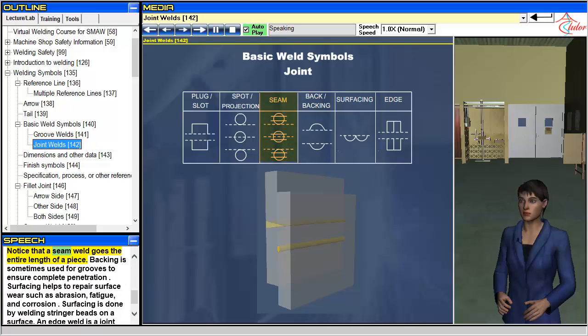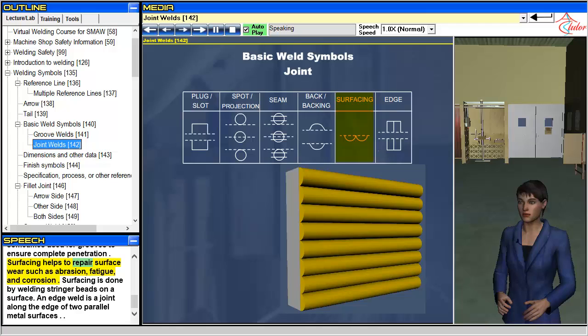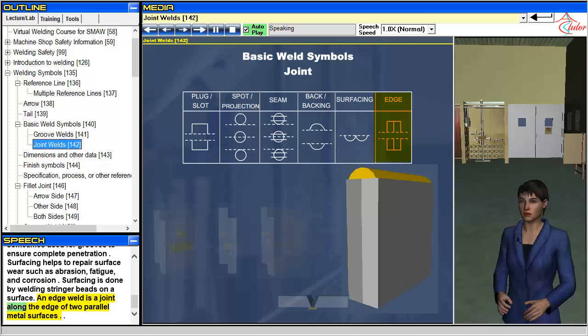Notice that a seam weld goes the entire length of a piece. Backing is sometimes used for grooves to ensure complete penetration. Surfacing helps to repair surface wear such as abrasion, fatigue, and corrosion. Surfacing is done by welding stringer beads on a surface. An edge weld is a joint along the edge of two parallel metal surfaces.